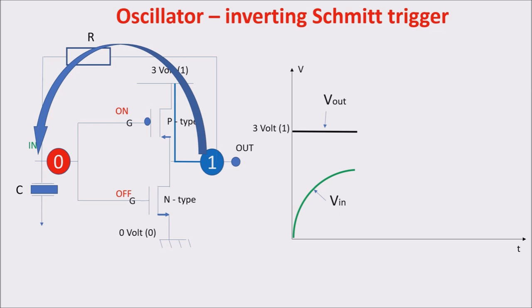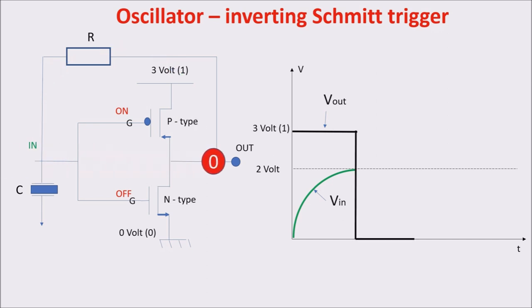When the input voltage reaches the threshold voltage of the N-type transistor, 2 volts in this example, this last turns ON and the output goes to zero, starting to discharge the capacitor through the N-type transistor. The discharging capacitor lowers the input voltage until it reaches the threshold voltage of the P-type transistor, 1 volt in this example, turning ON the P-type transistor and connecting the output with 3 volts.